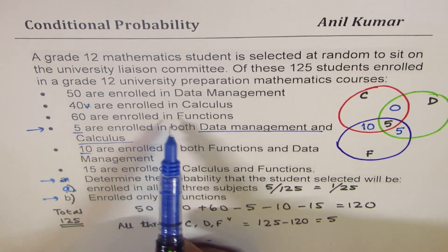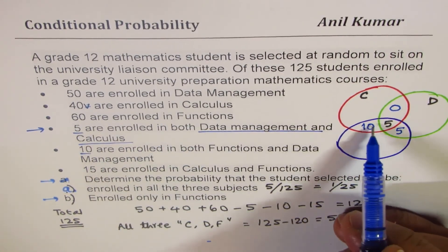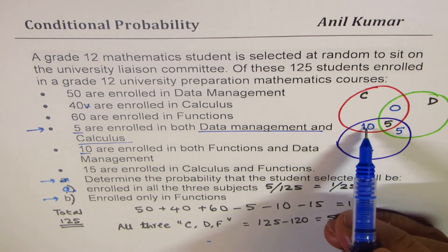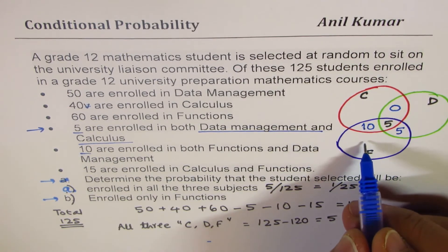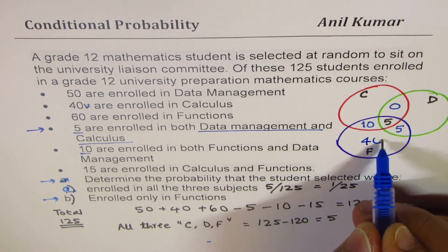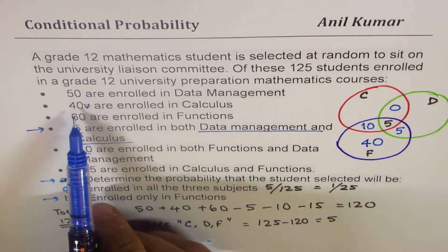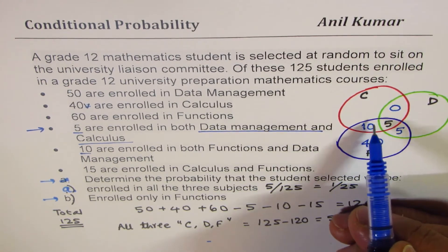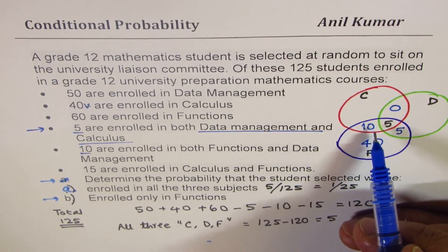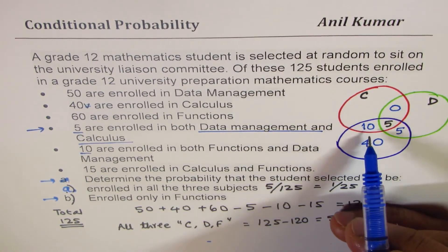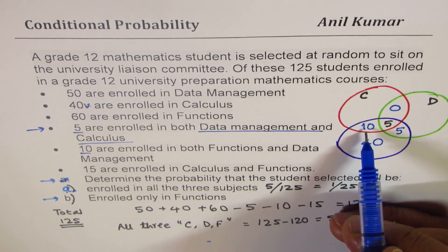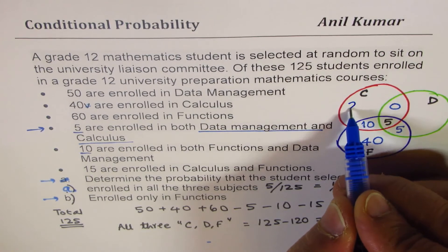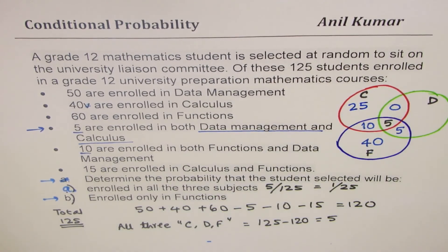Sixty are enrolled in functions. We want this group to be 60. We already have 20 there, so we need to add 40. Let me write 40 here. Forty are enrolled in calculus. We have 15. If you take away from 40, 40 take away 10 is 30, take away 5 is 25. That makes it 40.